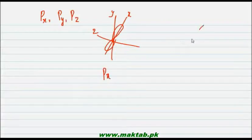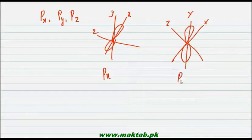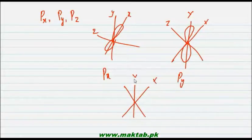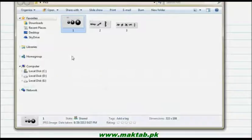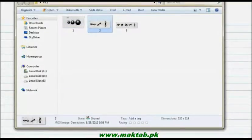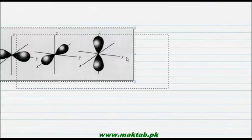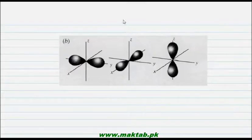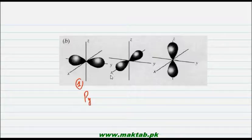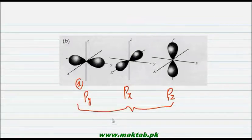Similarly, if the P sub-shell is oriented along the y-axis, it will be called Py. And if your P orbital is lying along the z-axis, it will be called Pz. Whichever direction the P sub-shell is along, that will be its name — Px, Py, or Pz. Looking at the 3D structure, the one along the y-axis is Py, along the x-axis is Px, and along the z-axis is Pz. These are the three orientations of the P sub-shell.